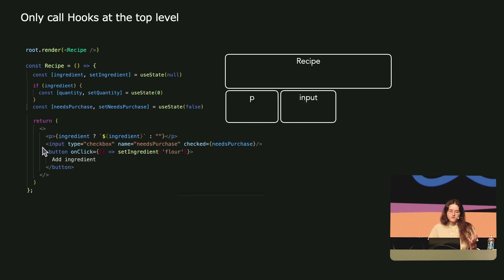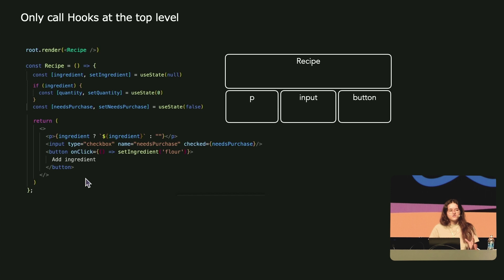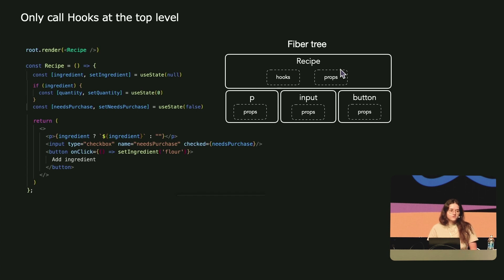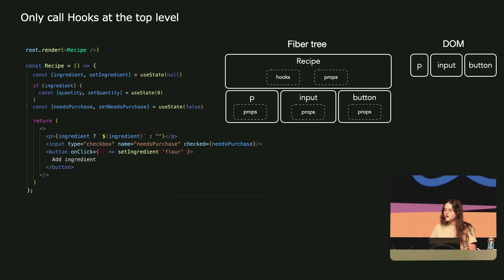We're going to display this value and add a button to add an ingredient. The first time we run our app, React is going to create a virtual tree made of our React components. This tree is called the fiber tree. The fiber tree holds all of the components that make up our app and their data — their hooks and props values. This way, when a render happens, React remembers these values and knows which components it has to render. From this fiber tree, React injects our HTML elements into the DOM to display our application on screen.